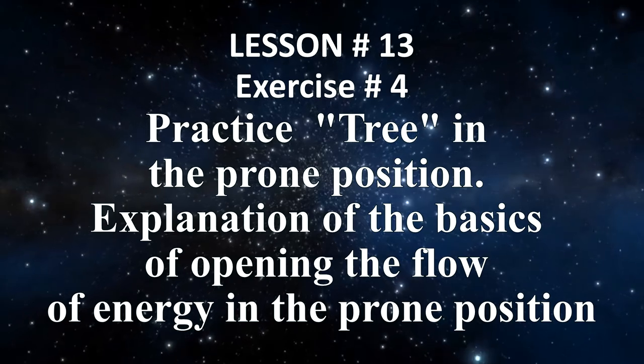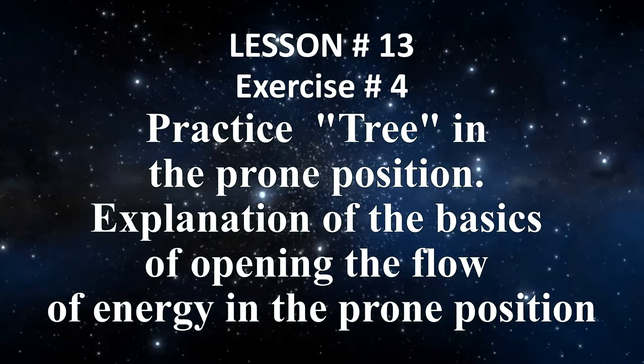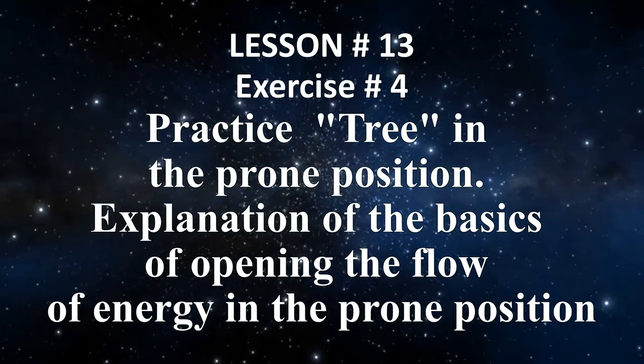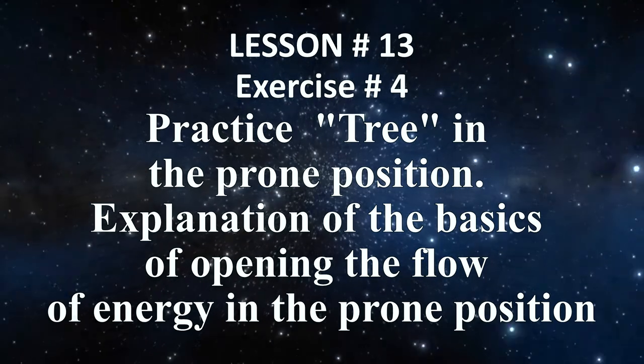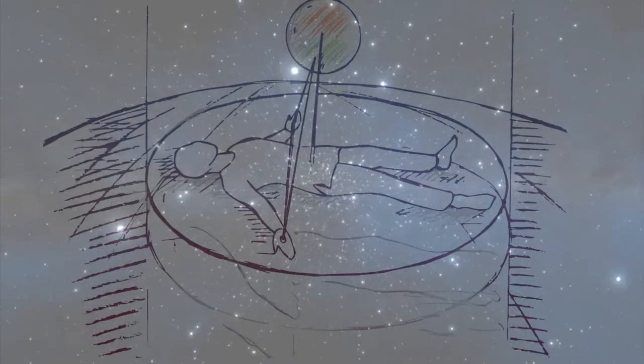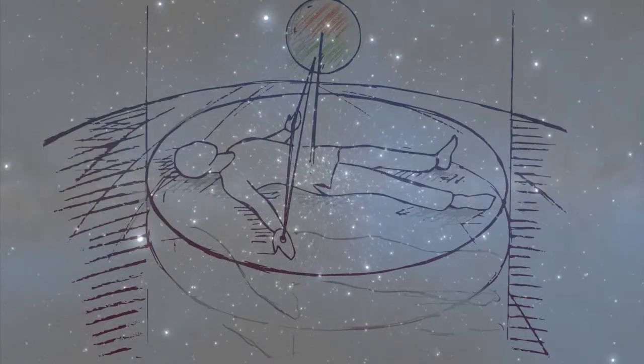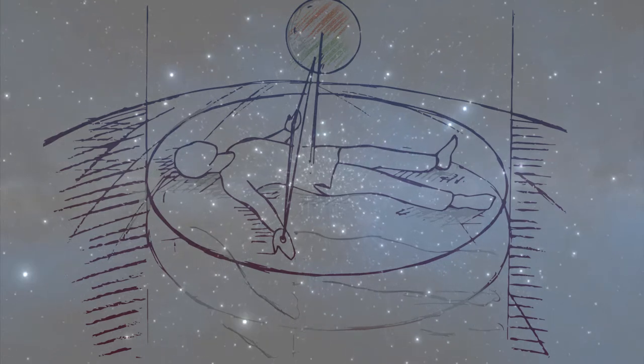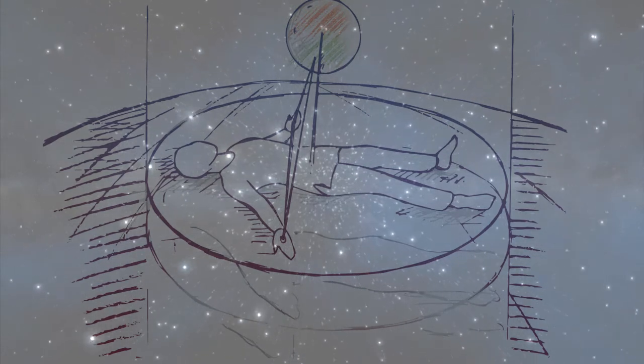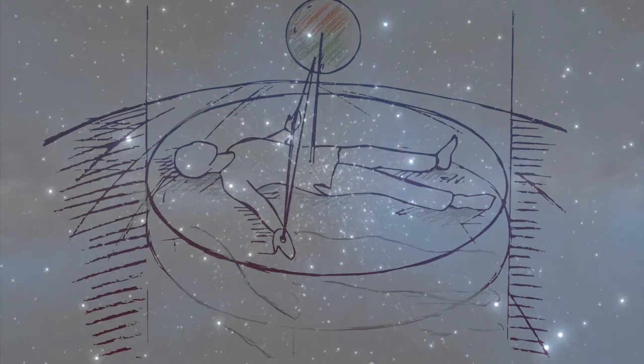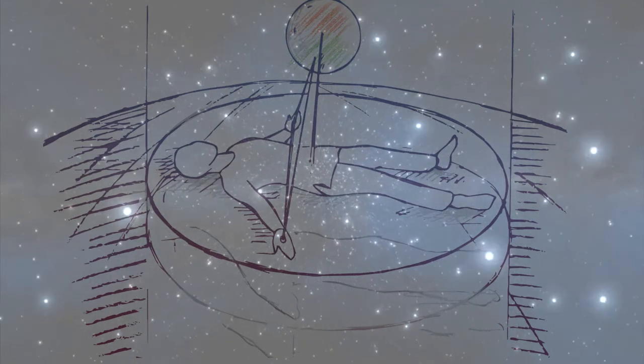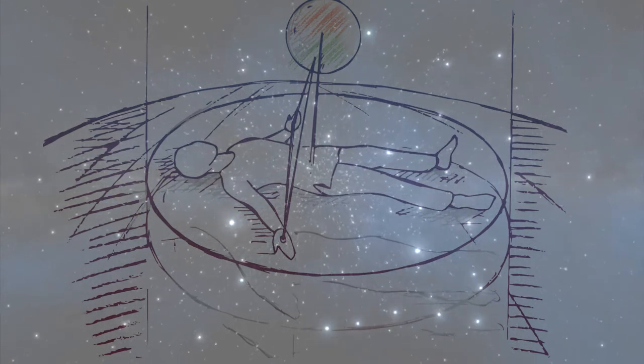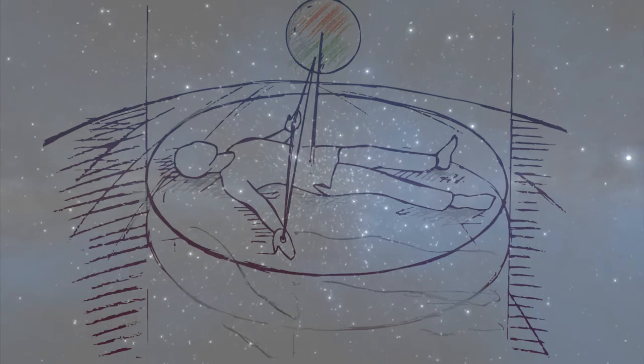Lesson 13, Exercise 4: Practice tree in the prone position. Explanation of the basics of opening the flow of energy in the prone position. This practice describes how to perform a tree, another name is flow, in a supine position. The first part shows the basics of performing a classic tree to open the flow of energy in the prone position. In the second part we consider the basics of connecting to the planets using the example of connecting to the moon.